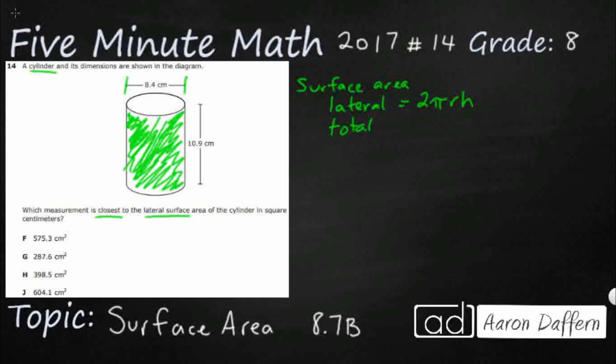If we wanted the total, which we don't for this problem, we would just do the 2πrh, that lateral, and then we would just add the two bases, the top and the bottom. But we're just dealing with the lateral in this case. So we want to find the surface area of this curved shape.